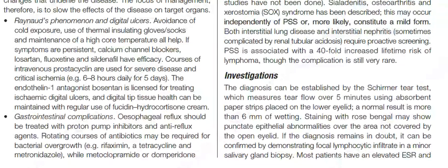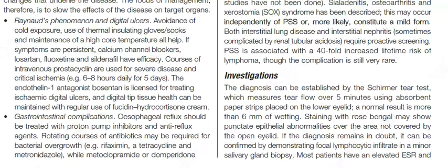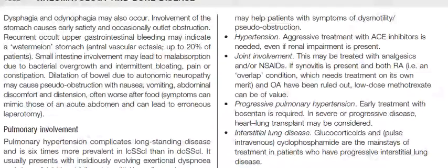Gastrointestinal complications: esophageal reflux should be treated with proton pump inhibitors and antireflux agents. Rotating courses of antibiotics may be required for bacterial overgrowth — for example, rifaximin, tetracycline, and metronidazole — while metoclopramide or domperidone may help patients with symptoms of dysmotility or pseudo-obstruction.